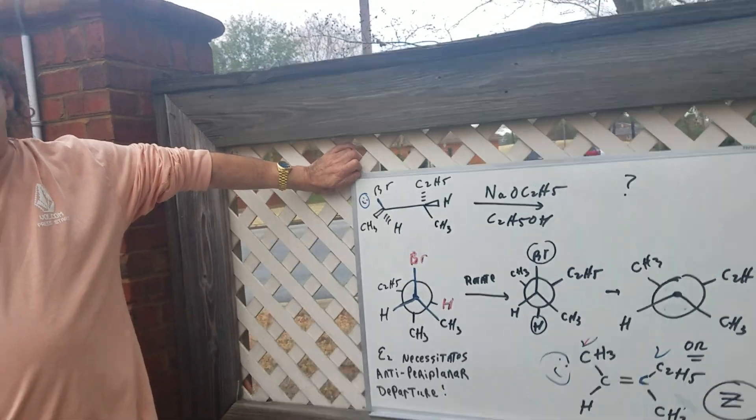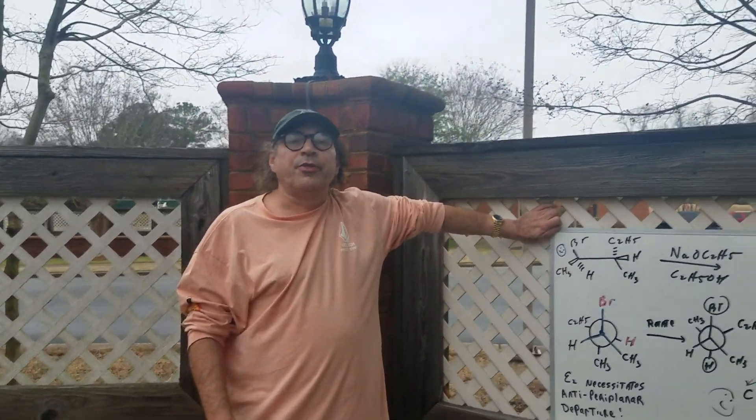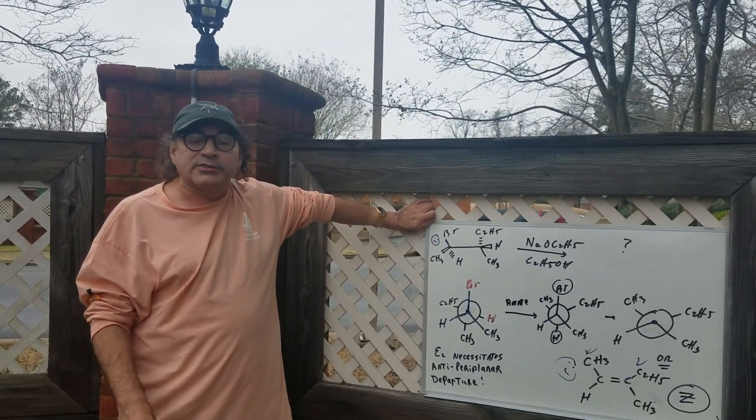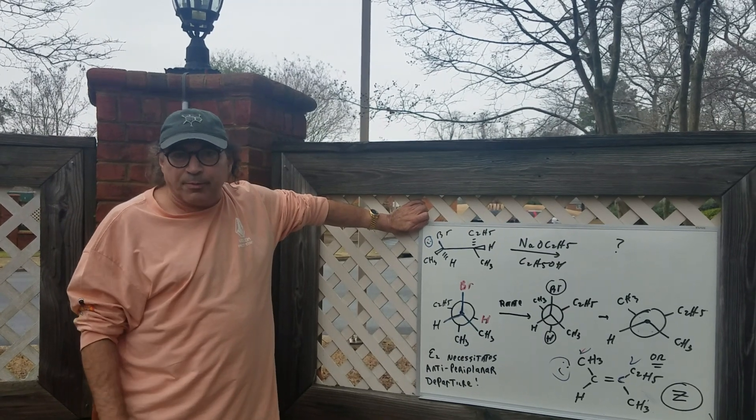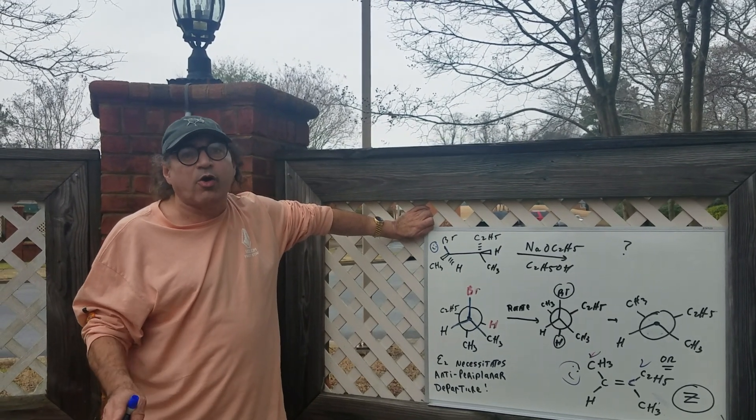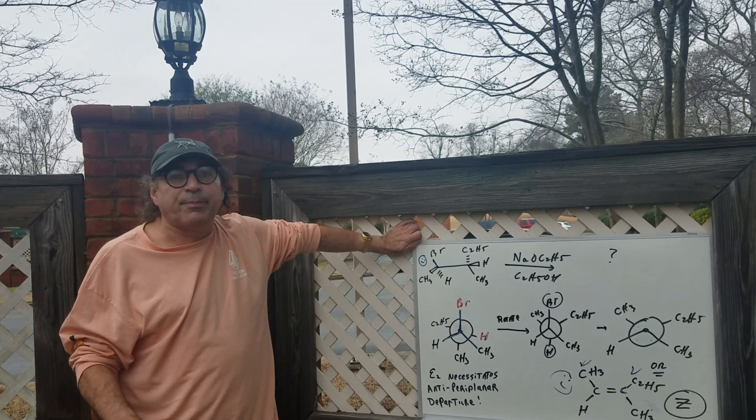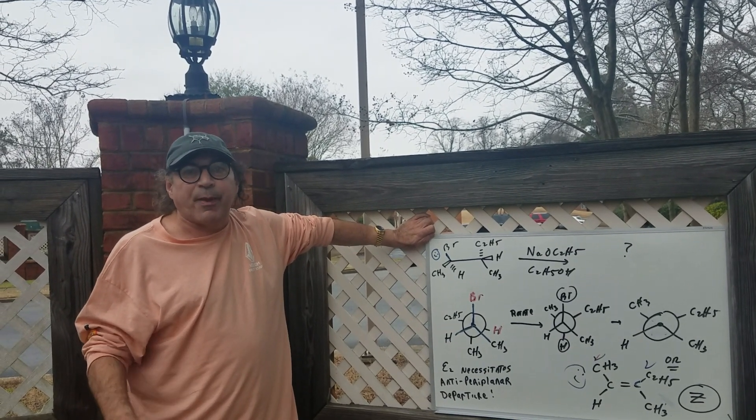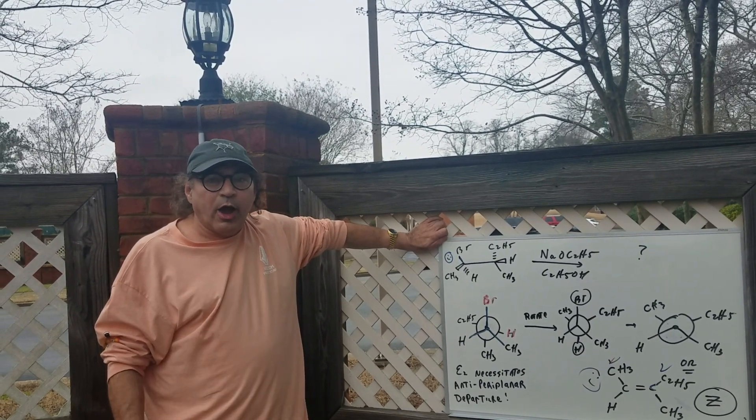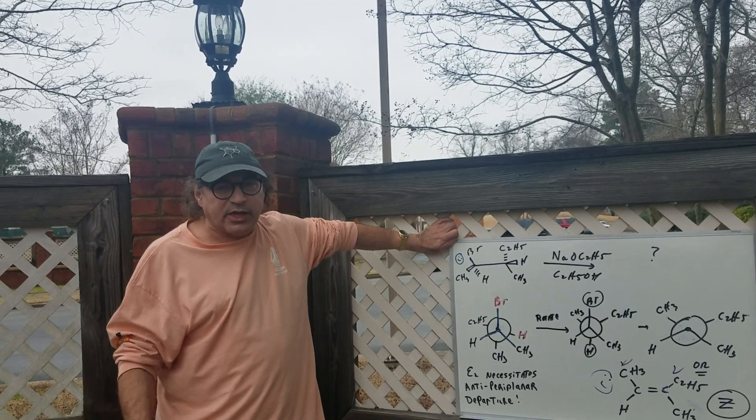I hope that helps on how to do the infamous sawhorse. Sawhorse is a little harder because, as I said, you've got to convert the sawhorse often into the Newman to really be able to see the anti-periplanar E2 departure. All right. I hope this helps. And I'll see you in study group.